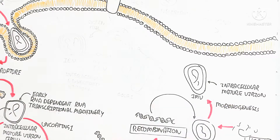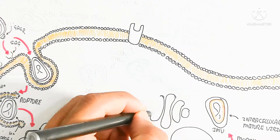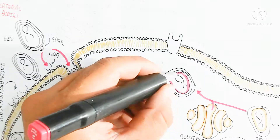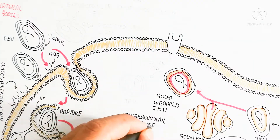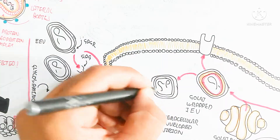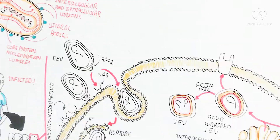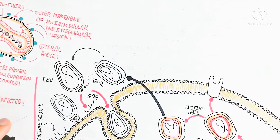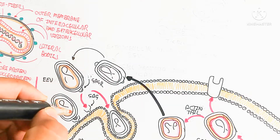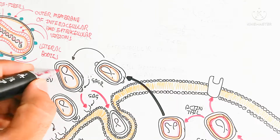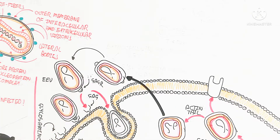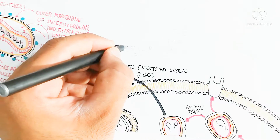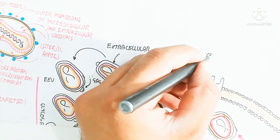The DNA recombination product combines with the assembled proteins to produce the intracellular mature virion (IMV). The IMV then enters the Golgi bodies, where it is modified and packaged using proteins produced by the monkeypox viral machinery. In the Golgi bodies, it matures to produce the intracellular enveloped virion (IEV), which combines with an actin tail to form the IEV that is then exocytosed.